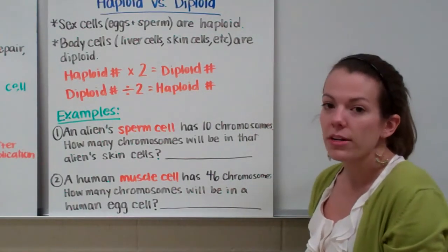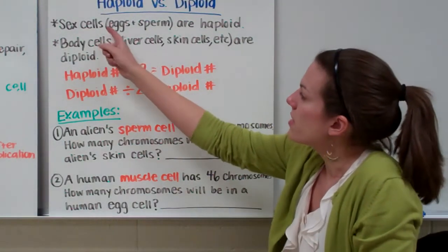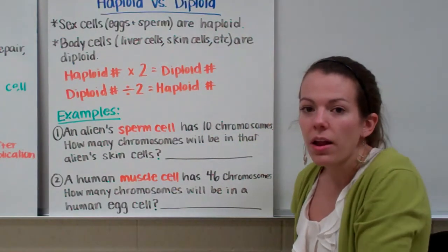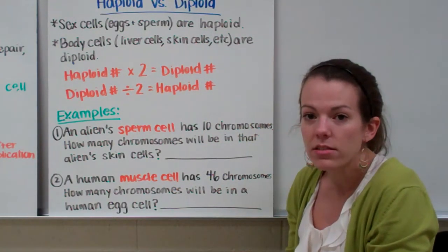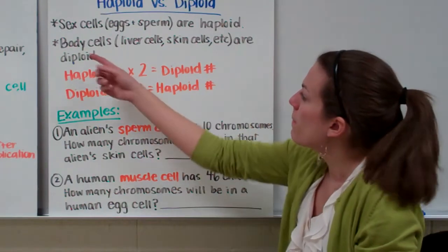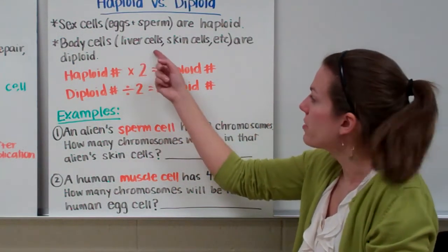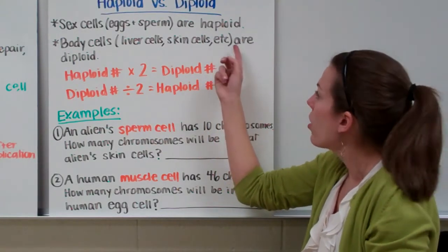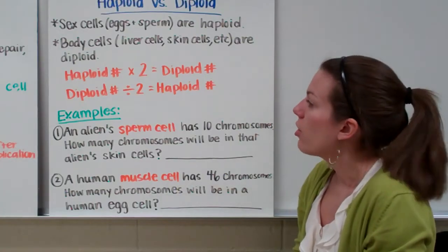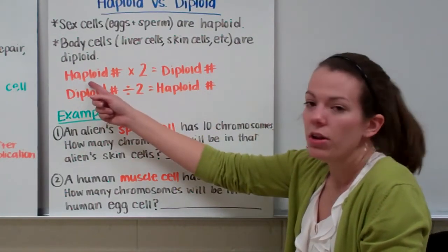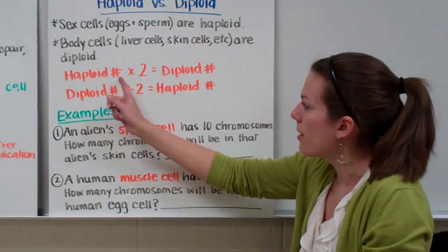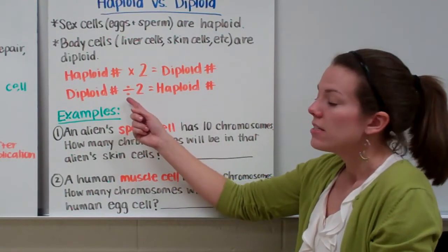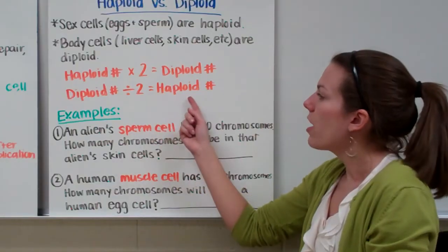Now let's compare and contrast haploid and diploid cells. Sex cells — eggs and sperm — are diploid. Body cells, for example liver cells, skin cells, and other cells in your body (just not your sex cells), are all diploid. A way to calculate your diploid number from your haploid number: haploid number times two equals your diploid number, and your diploid number divided by two equals your haploid number.